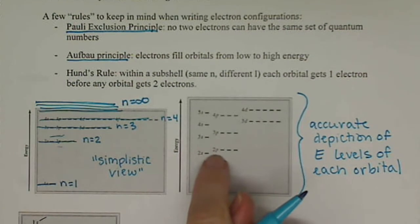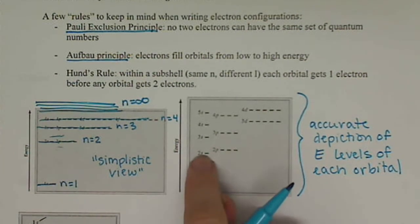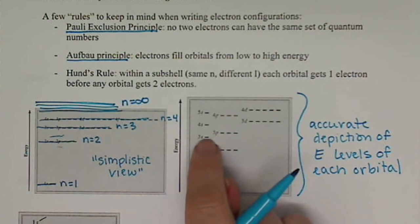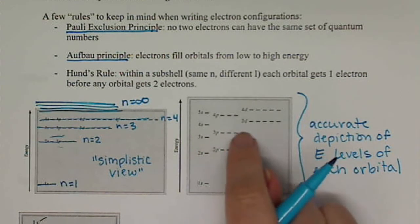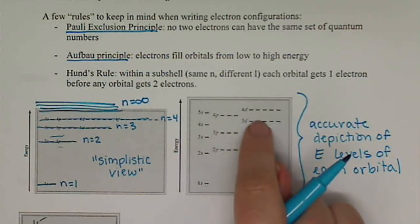So here we see there's a split, albeit small, but there is a split between the 2s and the 2p. And we see here, even at the 3s and the 3p, we see a similar split. And then our 3d here is split even further from our 3p and our 3s.